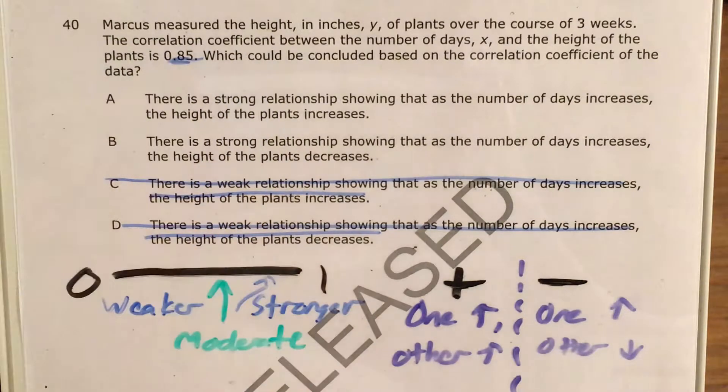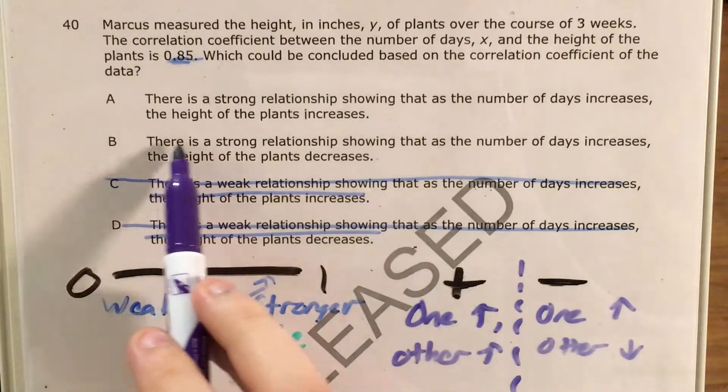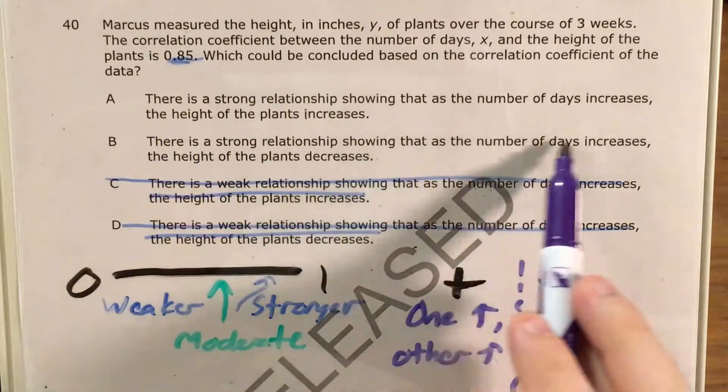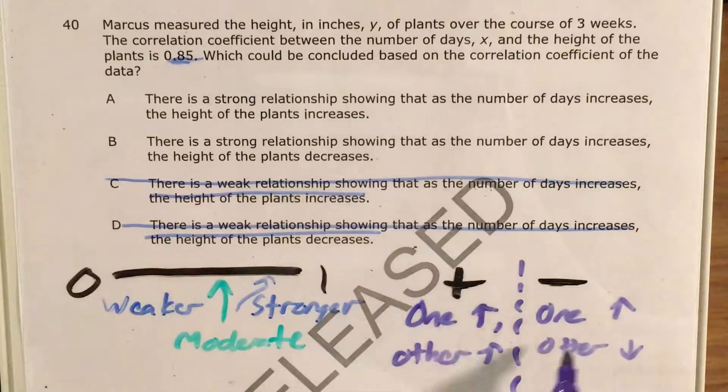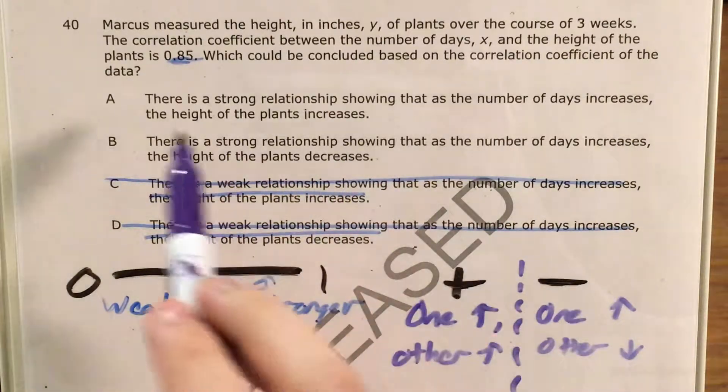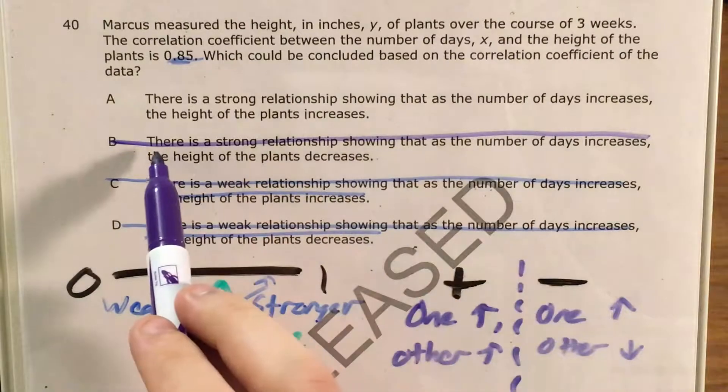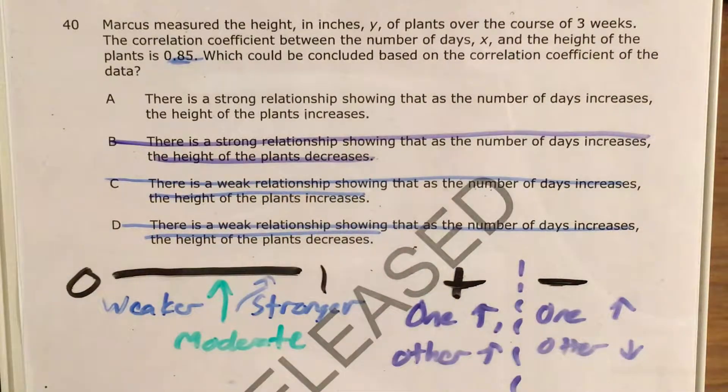Now, since this correlation coefficient is positive, we would say that as one increases, the other increases. And choice B, there is a strong relationship showing that as the number of days increases, the height of the plants decreases. That's the language of a negative relationship. And since the correlation coefficient was positive, the relationship has to be positive as well.